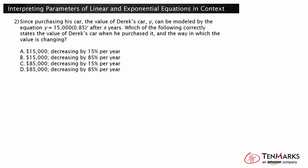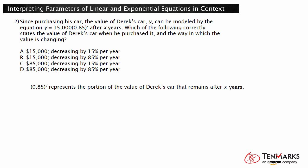Let's look at a second example. Since purchasing his car, the value of Derek's car, y, can be modeled by the equation y equals 15,000 times 0.85 to the x power after x years. Which of the following correctly states the value of Derek's car when he purchased it and the way in which the value is changing? Because x represents the number of years after Derek purchased his car, 0.85 to the x power represents the portion of the value that remains after x years. Each year 85% of the value remains, so the value of Derek's car is decreasing by 15% per year.